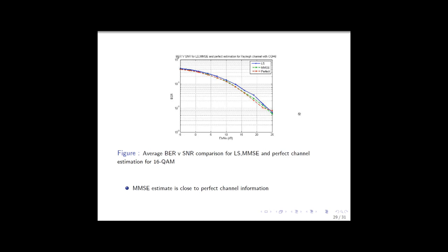This plot gives the curve of BER versus SNR for a comparison performed between least squares, MMSE, and the case where perfect channel knowledge is present at the receiver — that is, if the receiver had perfect knowledge of the channel, how would it detect the symbols? We can see that the green curve, which is the MMSE estimate BER, is very close to the scenario where the receiver has perfect channel knowledge. Thus, the MMSE estimate is very close to perfect channel estimation.